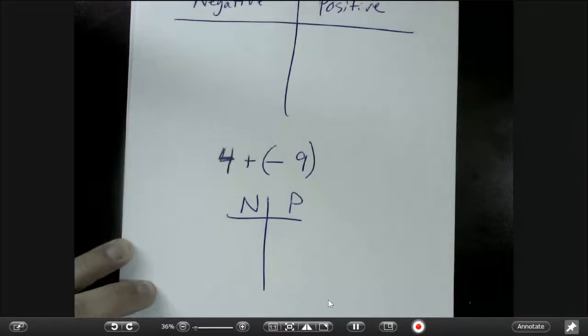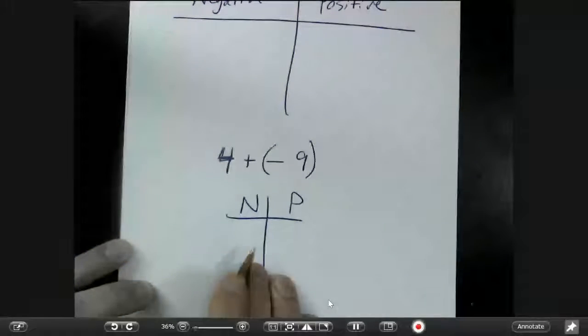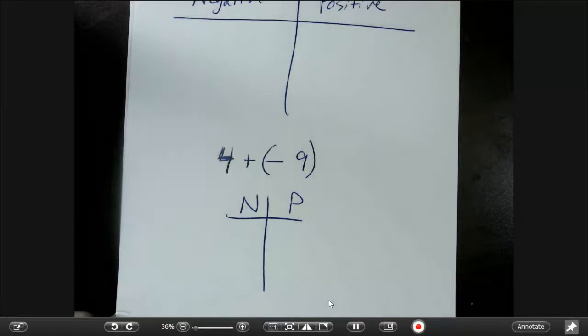If you have that type of a problem, 4 plus negative 9, you ask yourself, if this was like a scoreboard for a game, for a sports game, we'll say baseball or football, something like that.